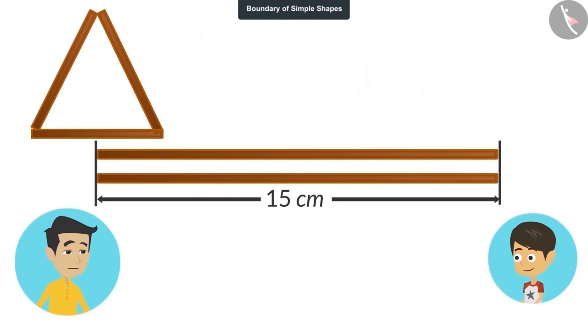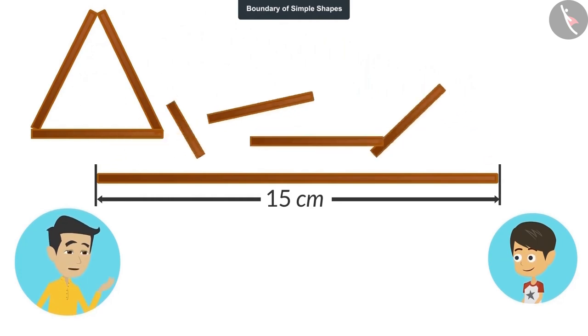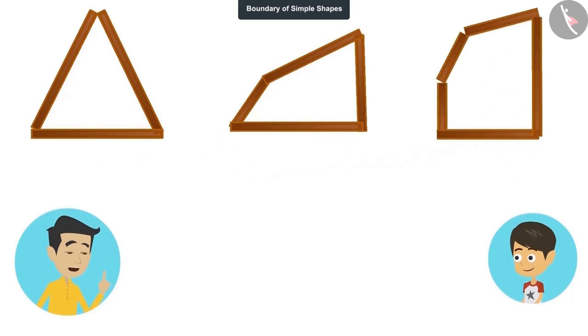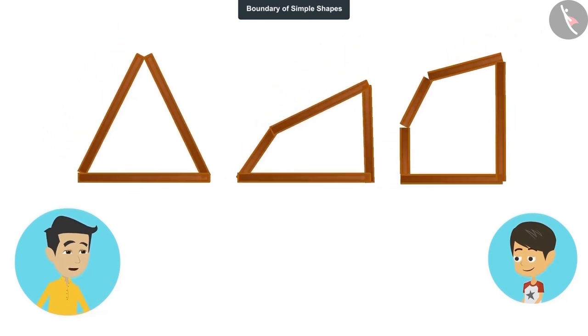Now I cut one of these sticks into three parts and make a shape from it. In the same way, I cut the other stick into four parts and make a shape from it. And finally, I cut third stick into five parts and again make a shape from it.